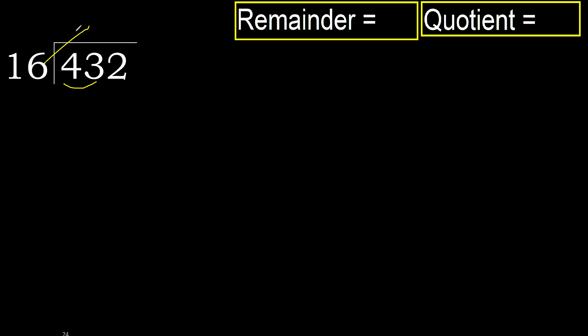16 multiply by 3 is 48, which is greater. Multiply by 2 is 32, which is not greater. Subtract.